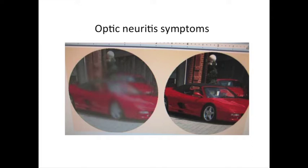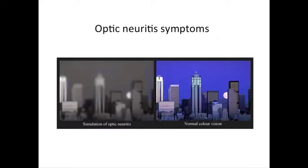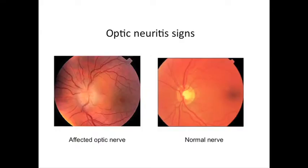What does the patient experience with optic neuritis? They may get blurred vision, which can be mild to quite severe in nature. They can also get loss of colour vision, which again can be very variable. As doctors, when you look in the back of the eyes, we can see that the nerve itself can look abnormal — swollen and blurry, as shown on the left-hand side. On the right-hand side is a healthy-looking optic nerve.